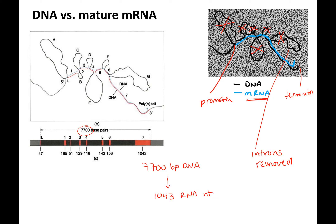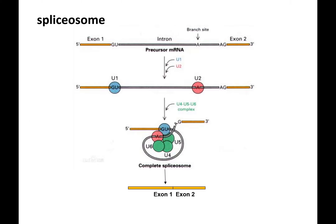It seems like a waste, but it's how we've evolved all of these different proteins. The complex that handles this — a protein-RNA complex — is called the spliceosome, and its job is to remove introns. Without going through all the molecular details, it basically brings together the two ends of the exon and splices out the intron.